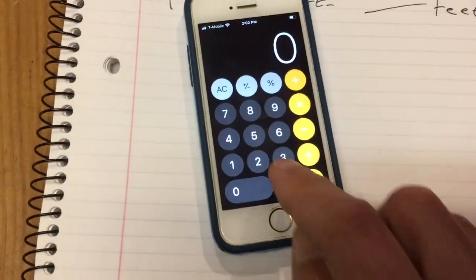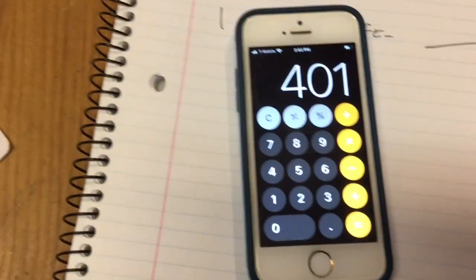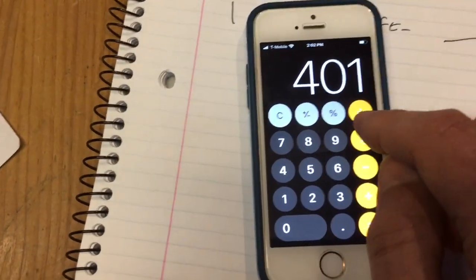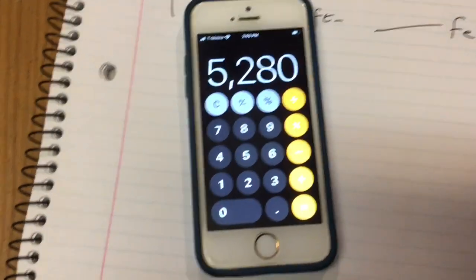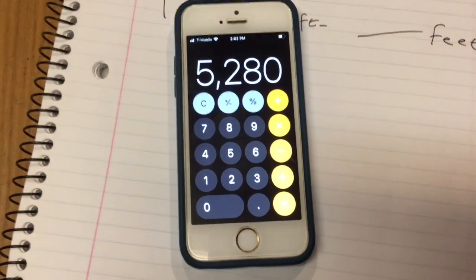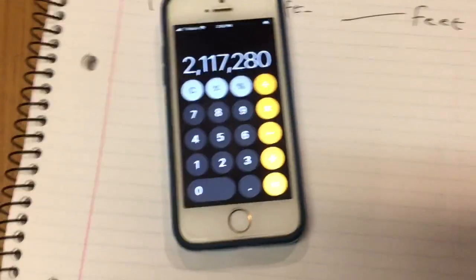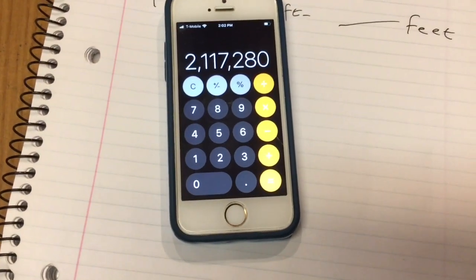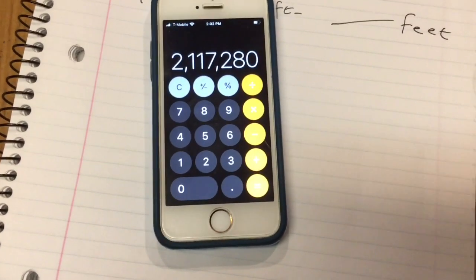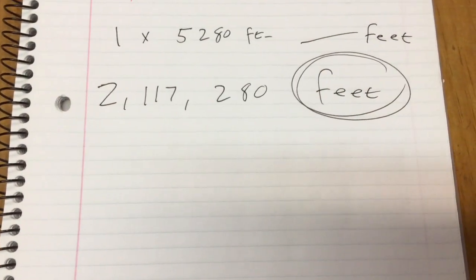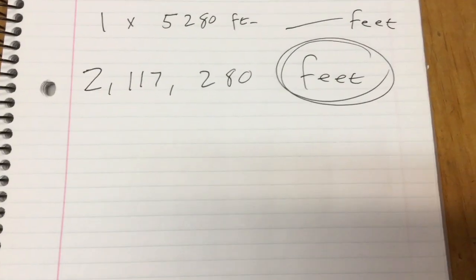So I'm going to take 401, the miles, times 5,280, and that's going to give me the amount of feet between Chicago and St. Paul. Feel free to use a calculator. First I'm going to put my miles in, 401. That's my Chicago miles. Now times the feet, 5,280. Whoa, that is a lot of feet. That is the amount of feet. I'm going to write that down on my paper. Over 2 million feet, 2,117,280 feet to Chicago.